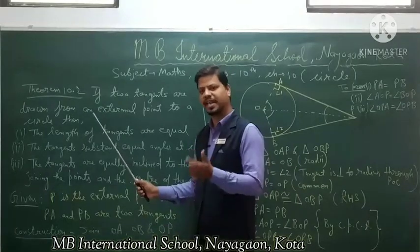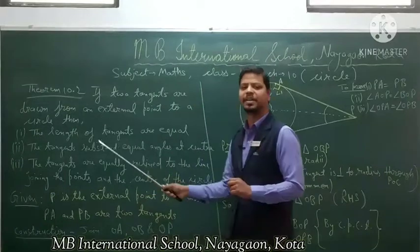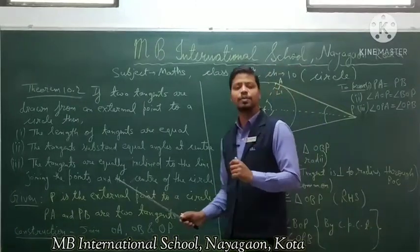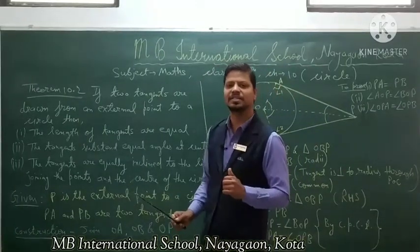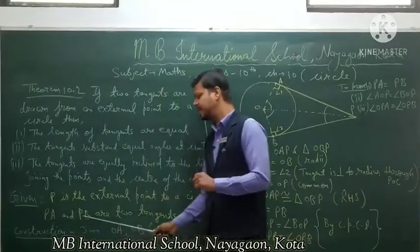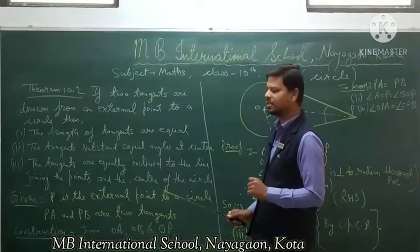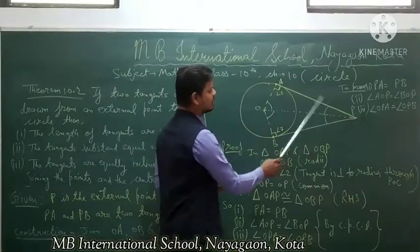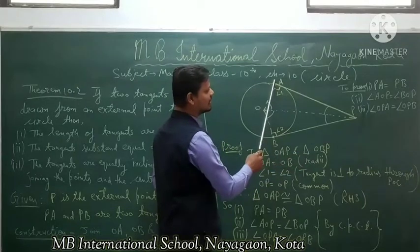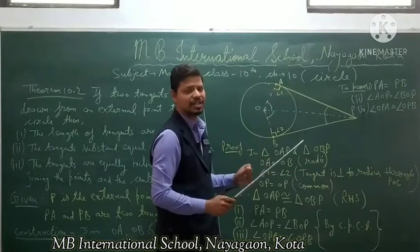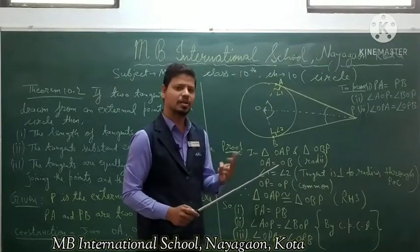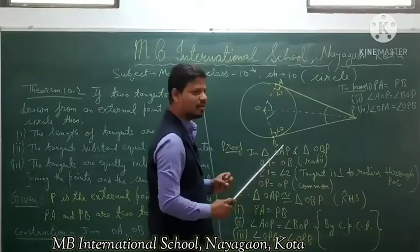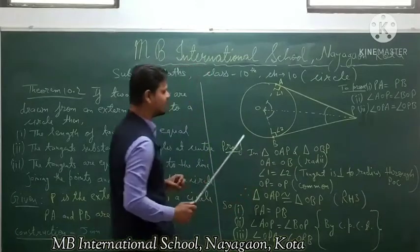Now, given: according to the statement, point P is the external point to a circle with center O. Two tangents PA and PB are drawn from external point P to the circle. In the diagram, O is the center of the circle and P is the external point from which two tangents PA and PB are drawn.